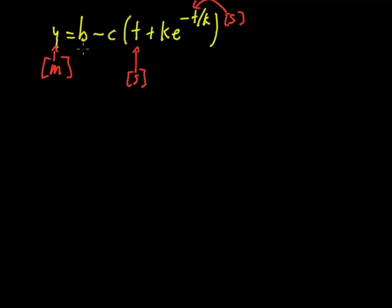When you add two numbers together, they have to be the same units, so that means this b has to be the same units as altitude. So b has to be some kind of length.